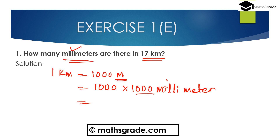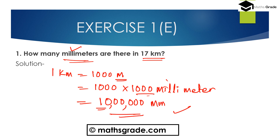That is six zeros: one, two, three, four, five, six — so it is ten lakh. So 1 kilometer is ten lakh millimeters. Now, seventeen kilometers will be seventeen lakh millimeters.